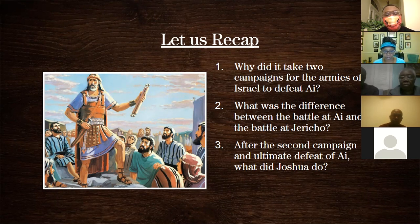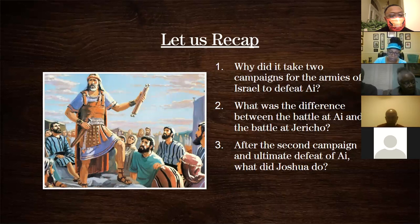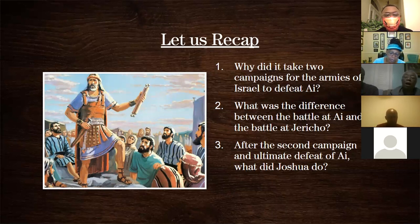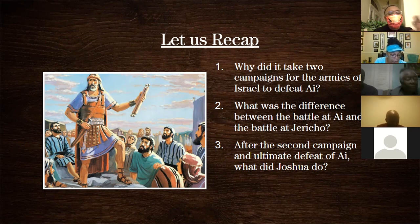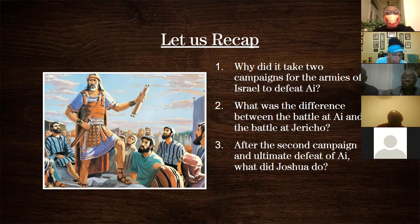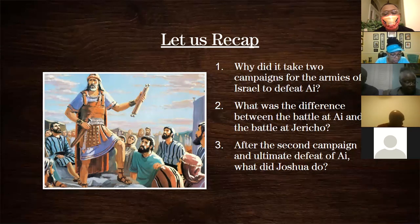Secondly, what was the difference between the battle at Ai and the battle at Jericho? Remember in Jericho, God said take all the gold and the spoil — that was going into the storehouse of Israel. But for the battle of Ai, God told them they could carry off all the plunder and livestock for themselves. So that was the difference: Jericho — don't touch anything, it's sacred; in Ai — anything you want as far as plunder and livestock, you can take.